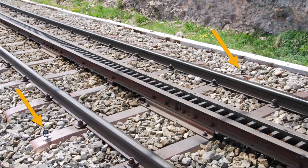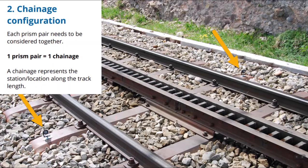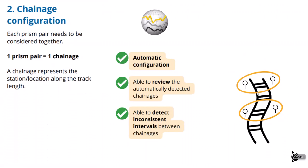The next thing we want to discuss is how these prisms are strategically placed. For rail monitoring, the prisms are placed on each side of the track, and the two prisms on either side need to be considered together. A prism pair is considered as a chainage, and each chainage represents a station or location along the track length. T4D Rail does this configuration automatically for you — it knows which two prisms are a prism pair and will tell you which chainage they are at.